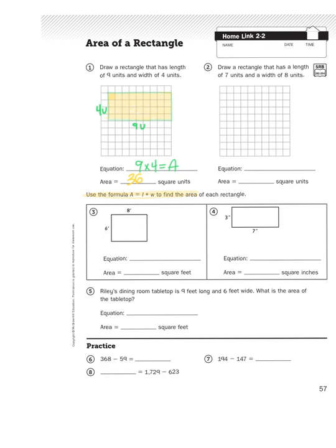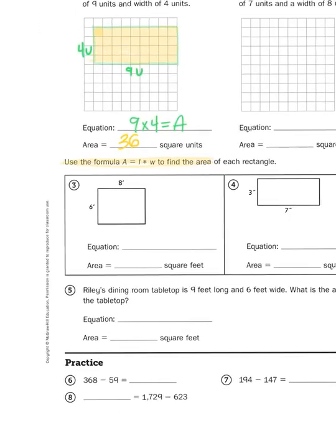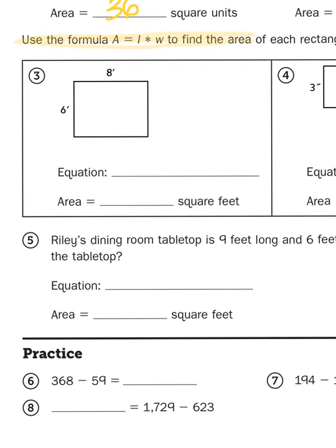So that's what we're doing here when we are finding the area of a rectangle. We are just multiplying the length times the width. So for problem number three, it says that the length of this rectangle, which is not drawn to scale, is eight feet. And the width is six feet.